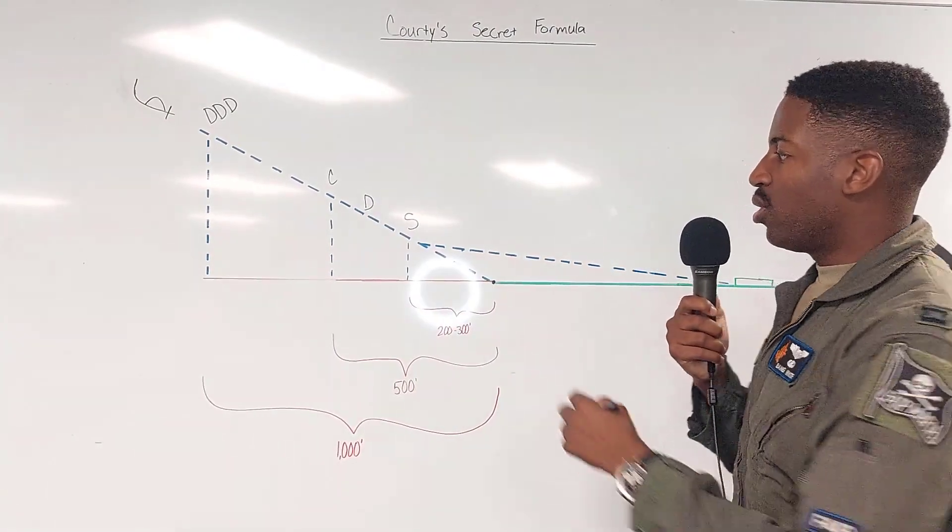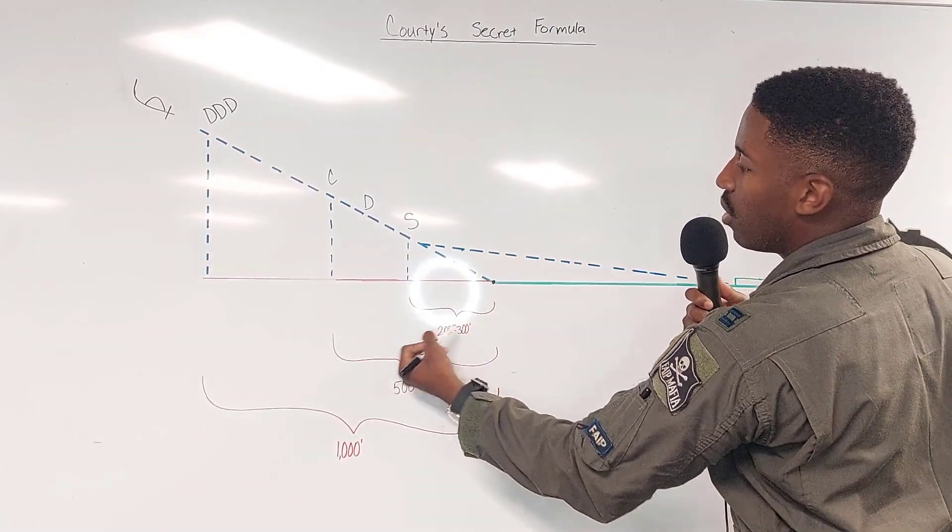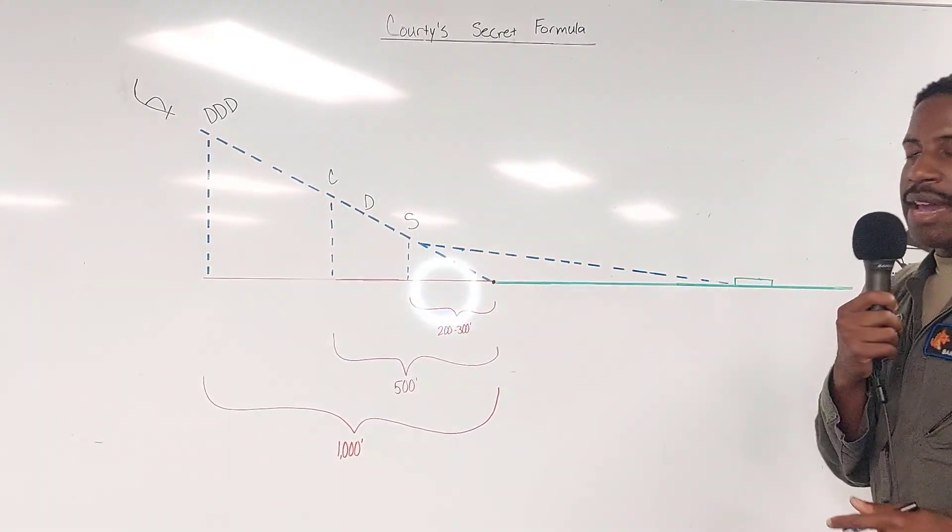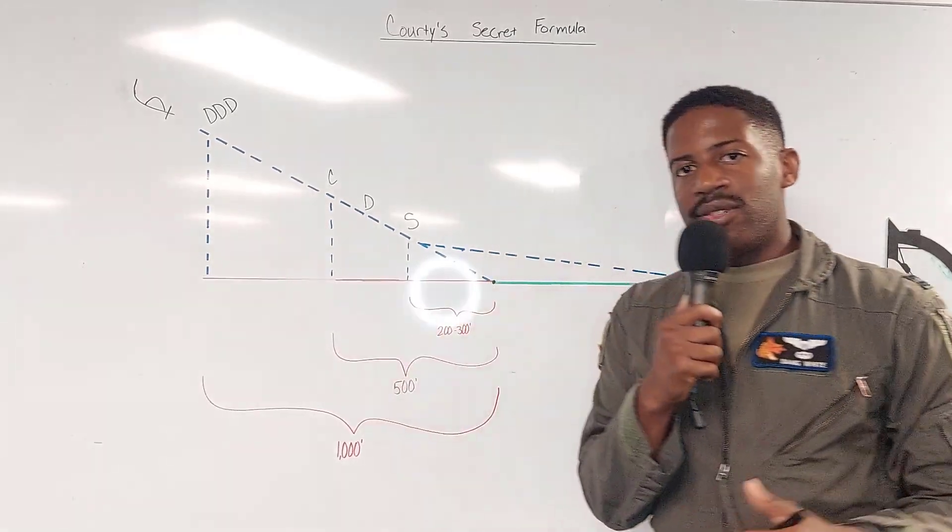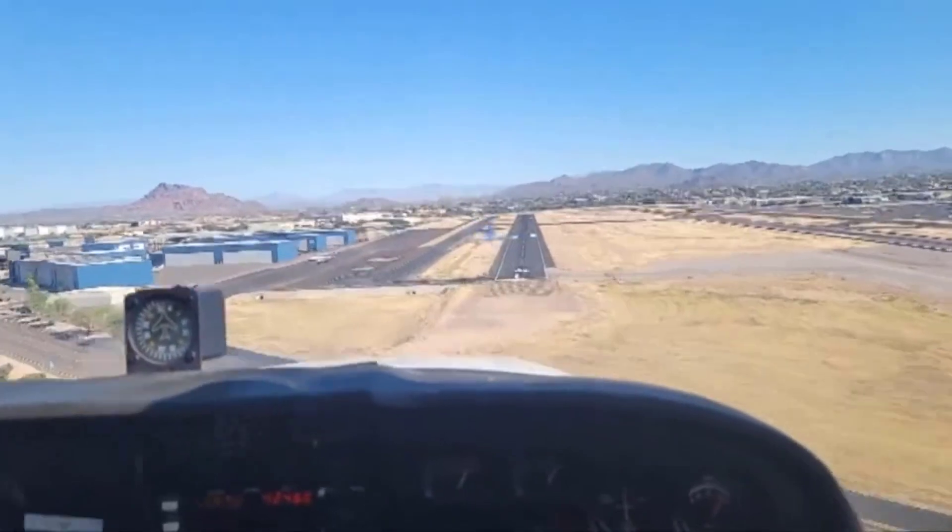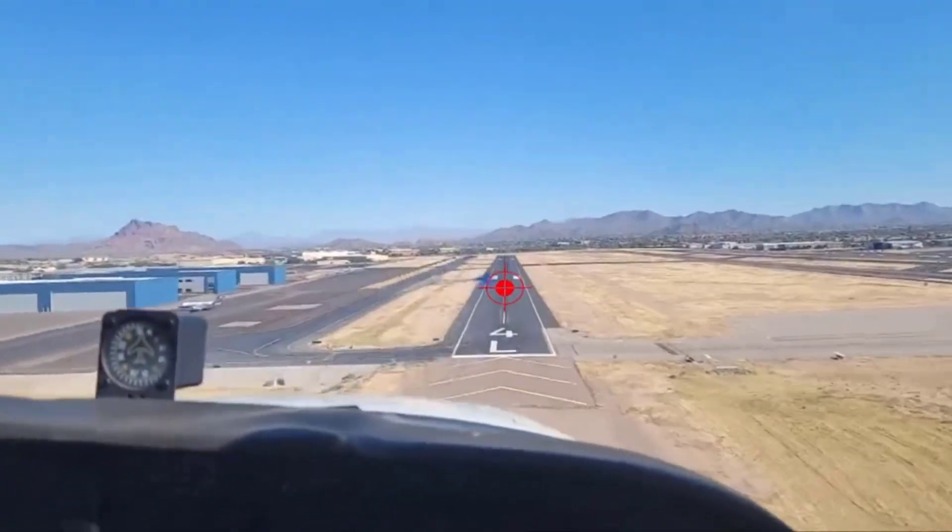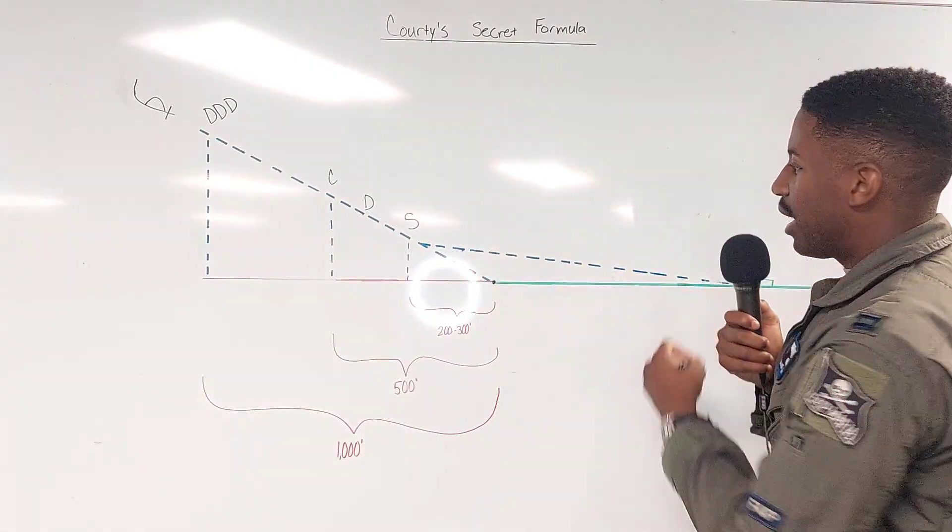Shift. So we're going to shift our aim point from the threshold two to three hundred feet out, we're going to shift our aim point out to the captain's bars. So from the top, a thousand feet out we're driving at the runway, drive drive drive. 500 feet prior, crack my power, drive, shift my aim point to the captain's bars.